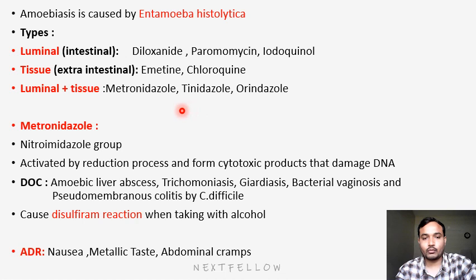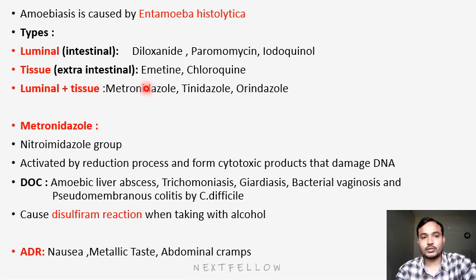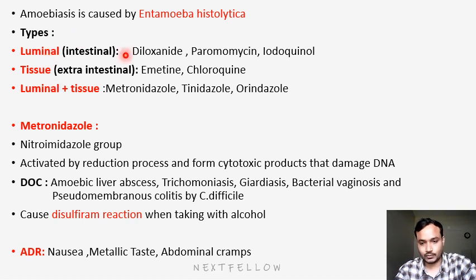The most important drugs here are the nitroimidazole group drugs — that is metronidazole, tinidazole, and ornidazole. You have to remember the names of types of amoebiasis: luminal, tissue, and luminal plus tissue, and the corresponding drugs. The main one that is very important is metronidazole.